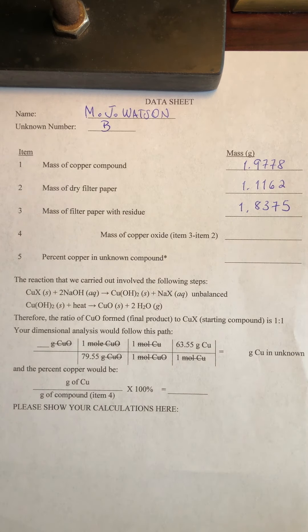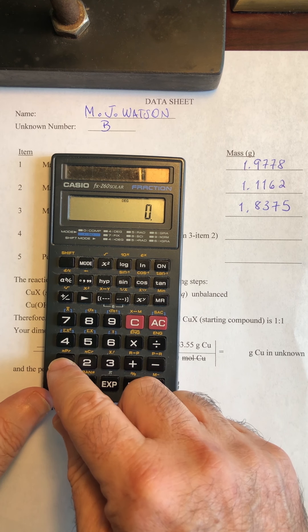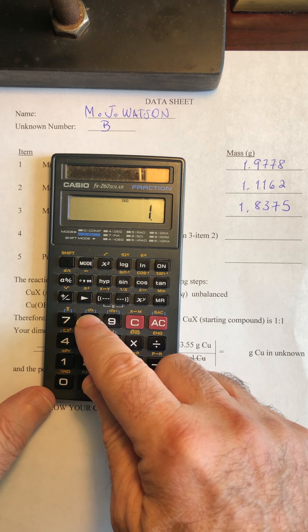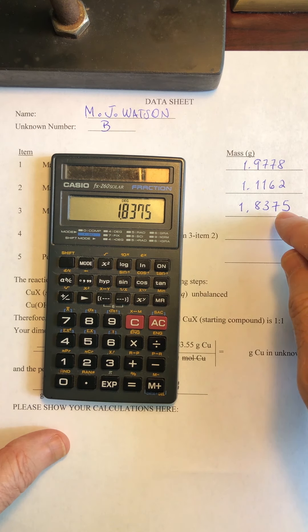So the first task here is to find out how much copper oxide was produced in the reaction. And I'm going to use my little calculator here. So we're going to have 1.8375, which is the final mass,